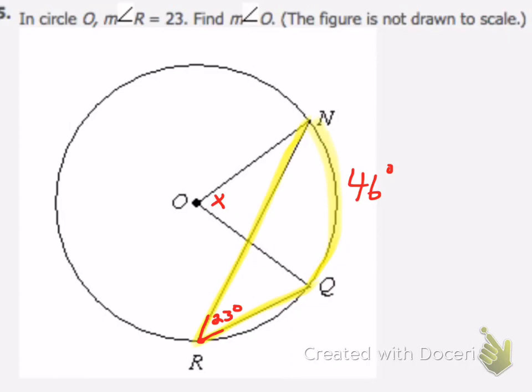central angle is the same as the intersected arc. So NQ is the arc formed by angle O. Since angle O is a central angle, this means that the measure of angle O has to be the same as the